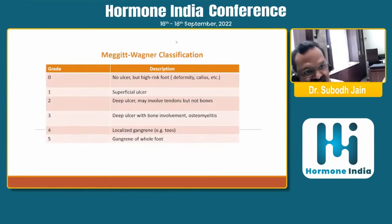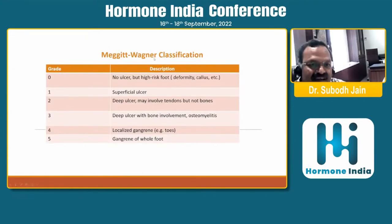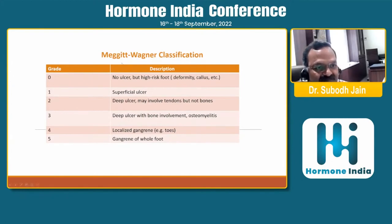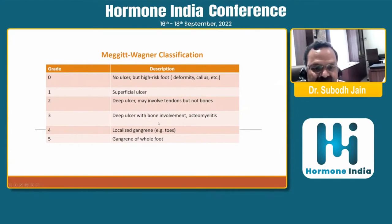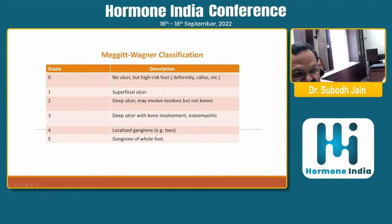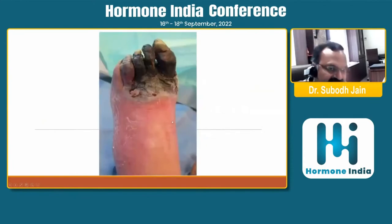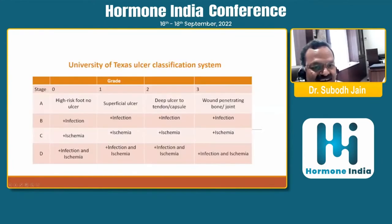The most common classification system is the Meggitt-Wagner classification, graded 0 to 5. Grade 0 is no ulcer; Grade 1 is superficial ulcer; Grade 2 is a deep ulcer involving tendons but not bone; Grade 3 is deep ulcer with bone involvement and osteomyelitis; Grade 4 is localized gangrene of one or two toes; and Grade 5 is gangrene of the whole foot.